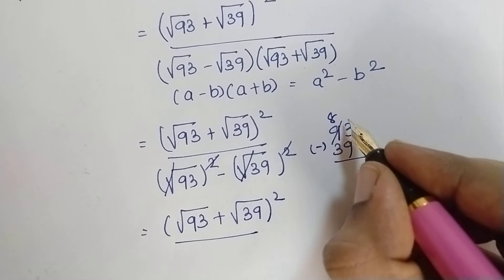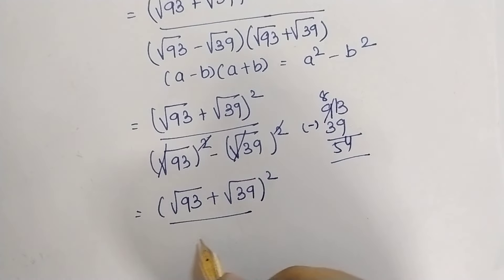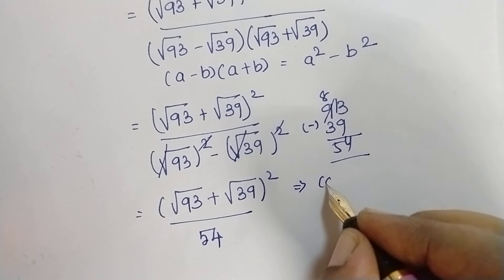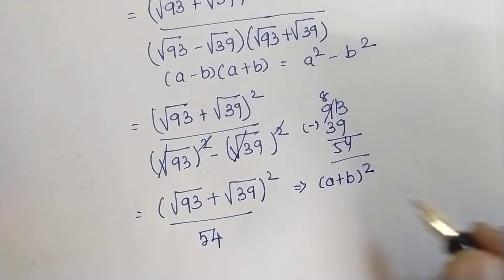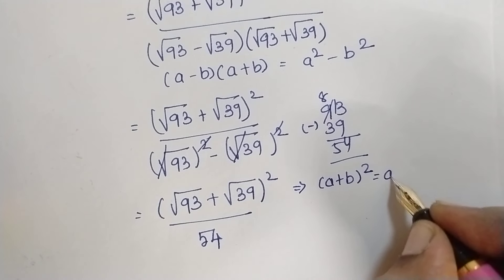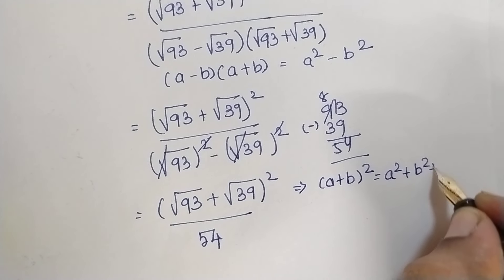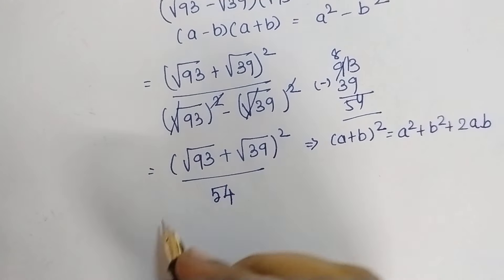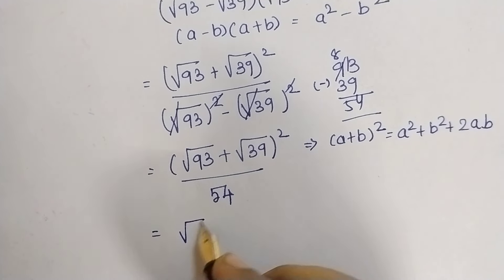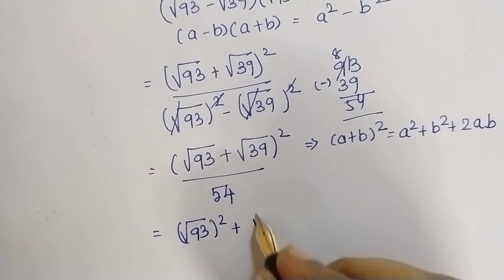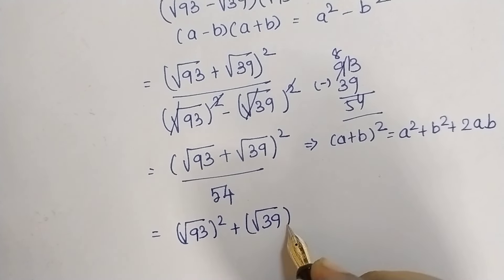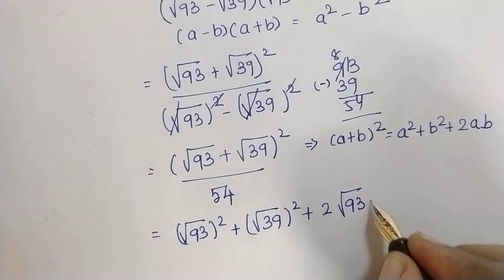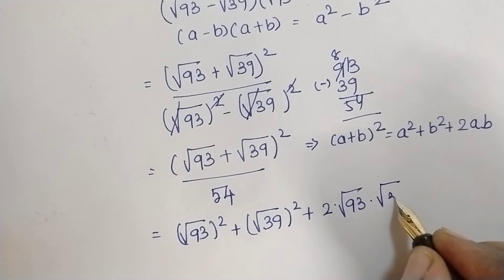93 minus 39 equals 54. Now the numerator is in the format of a plus b, the whole square. That formula expands to a squared plus b squared plus 2ab. So this becomes root 93 the whole square, plus root 39 the whole square, plus 2 multiplied by root 93 multiplied by root 39, all divided by 54.